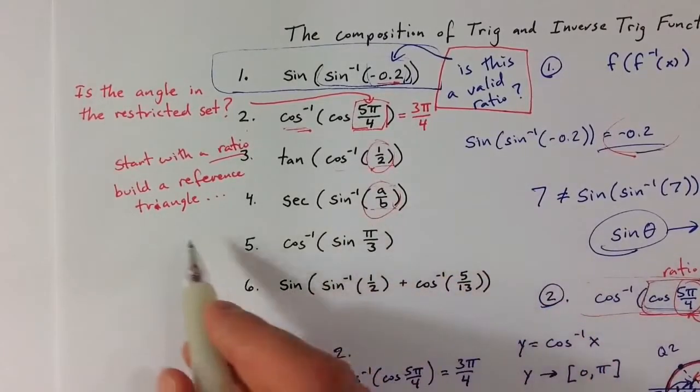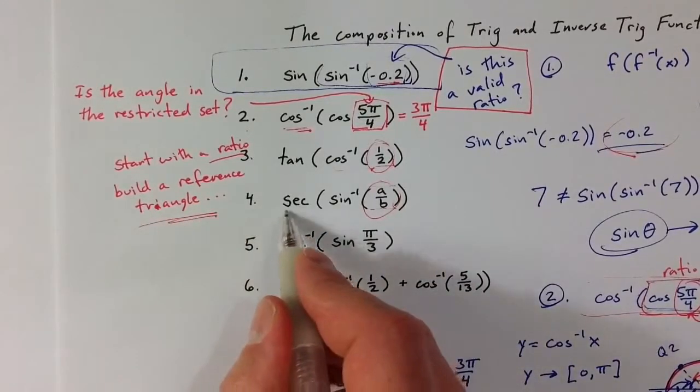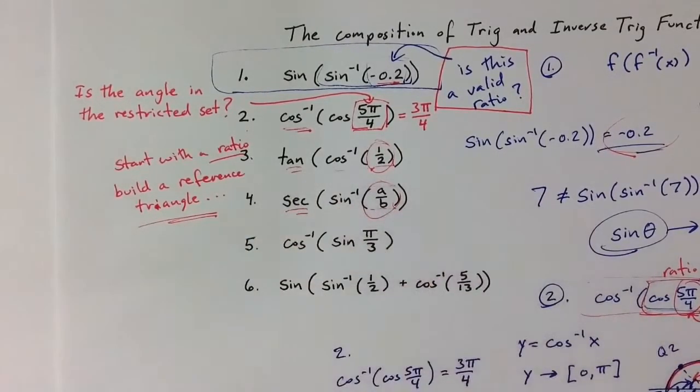And so we can build a reference triangle and then figure out what the other ratio should be, what the tangent ratio and the secant ratio should be.